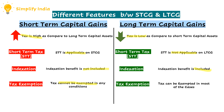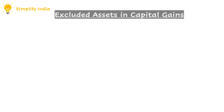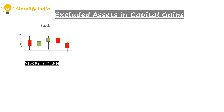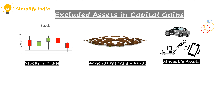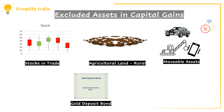Now we are going to learn about the assets which are excluded from the capital assets for the purpose of capital gains. First is stock in trade — any shares or stock in trade which are active in your portfolio, which you have not sold and have not realized any gain from, are excluded. Next is agricultural land in rural areas, and any movable assets except jewelry and the gold deposit bond under the Gold Deposit Scheme 1999.